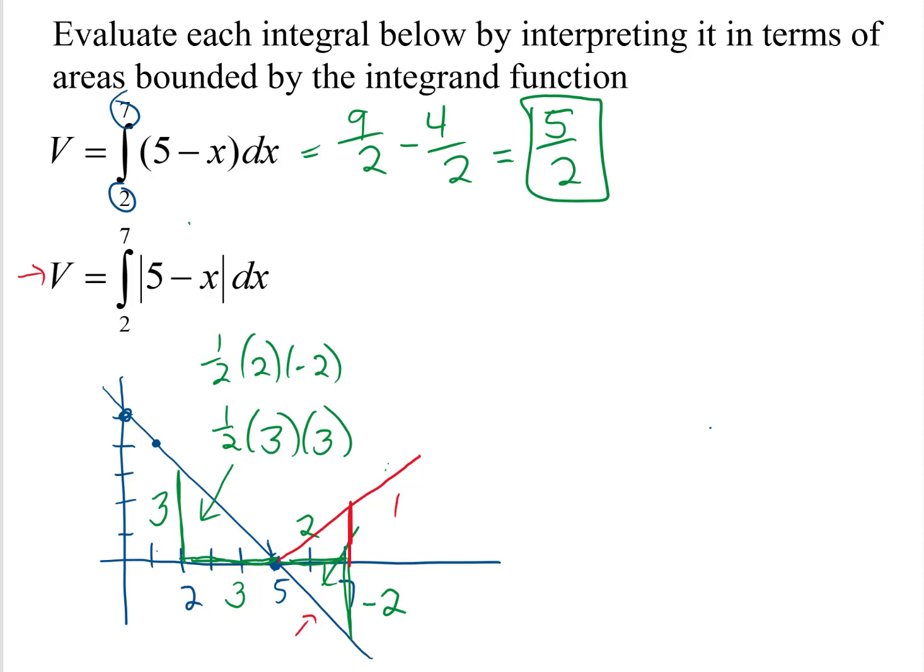So this one will be 1 half the base times the height, or 4 halves. So when I go to evaluate this integral, I'm going to have 9 halves plus, because I'm above the 4 halves, so we get 13 halves.